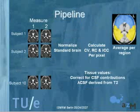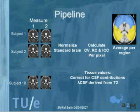The pipeline: we first measured each subject twice. Those data were normalized to standard brain coordinates and smoothed with a kernel of six millimeters. Then we calculated all these statistics per pixel, yielding a map of each statistic. We then averaged those statistics per region of interest — the frontal lobe and the temporal lobe. Furthermore, we corrected these regions for CSF contribution, which was derived from the T2 map.